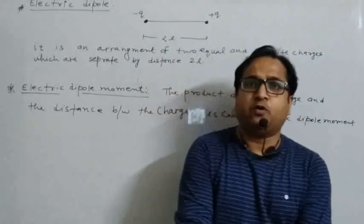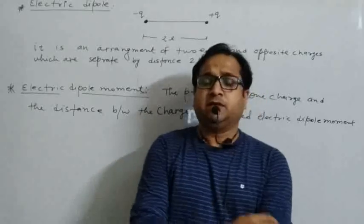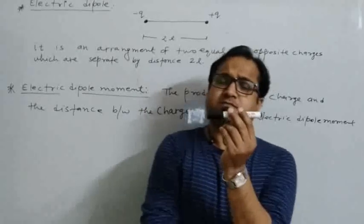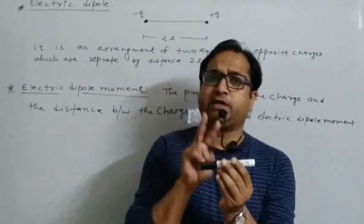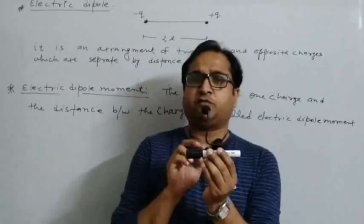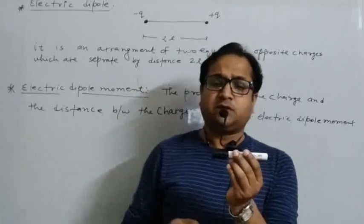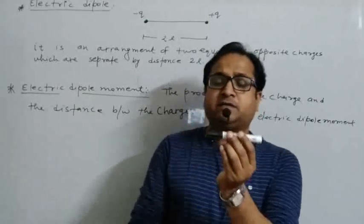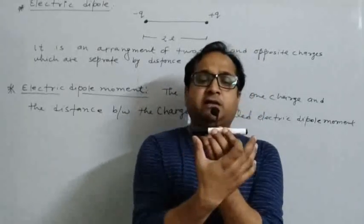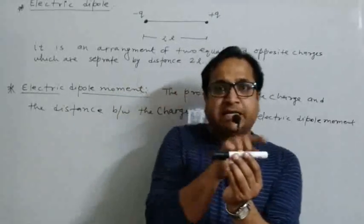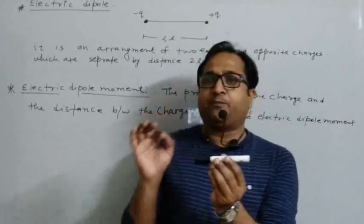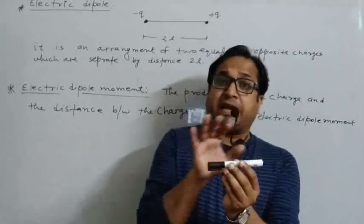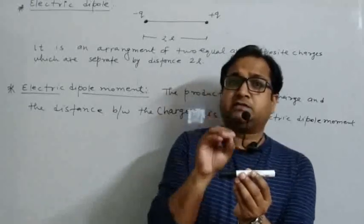An electric dipole is an element of two equal and opposite charges. Let us consider a marker — if this marker has two equal and opposite charges on its sides, like minus q and plus q, placed at its corners and separated by a distance 2l, then this element is called an electric dipole.